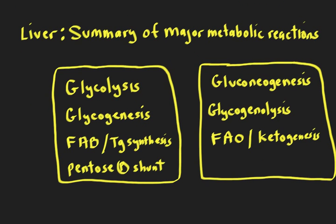Now that takes us to the pathway names themselves. We're just talking about the liver — some of these reactions are liver-specific or mostly occurring in the liver. For example, ketogenesis is really only a liver metabolic reaction, whereas some like glycolysis are kind of everywhere. So let's focus on these things just in the liver for now, and then as we talk about other places, we can go into some specifics.